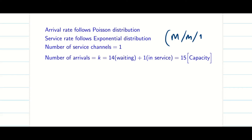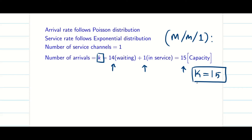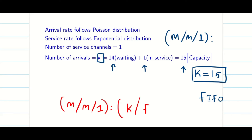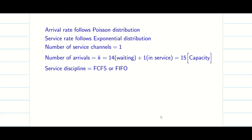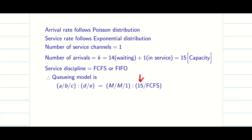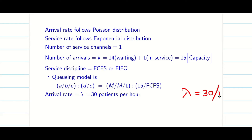As discussed, 14 people are waiting and one person is in service, so system capacity K equals 15, and it follows FIFO. We write it clearly as M/M/1 finite server FIFO model — sometimes called first come first serve, both are the same. Since arrival rate is 30 patients per hour, lambda equals 30 per hour.